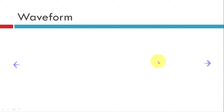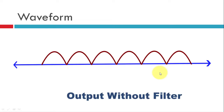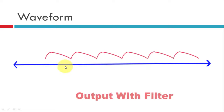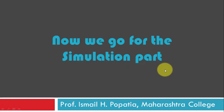Let's see the waveform. This is the input — a pure sine wave. Then this is the output without the filter. And because of the application of the filter, this voltage does not fall. If we increase the value of the capacitor, this will almost become a straight line. So this is what is required. This was regarding the explanation part.